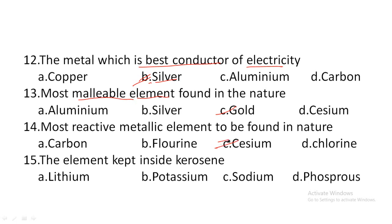Next one: the element kept inside kerosene — option A: lithium, option B: potassium, option C: sodium, option D: phosphorus. The element stored in kerosene is sodium. Phosphorus is stored in water. The element stored in kerosene is sodium. Hence option C is the correct answer.